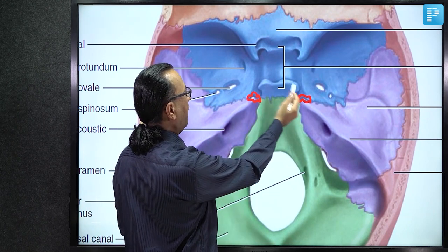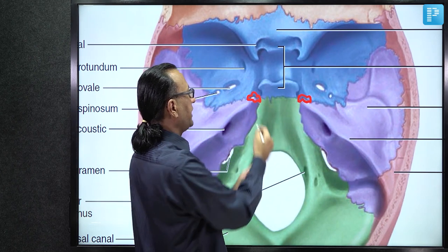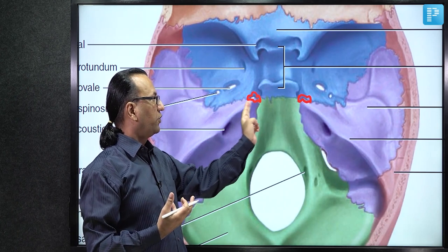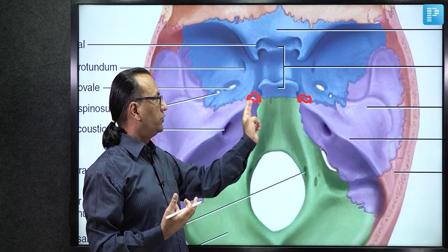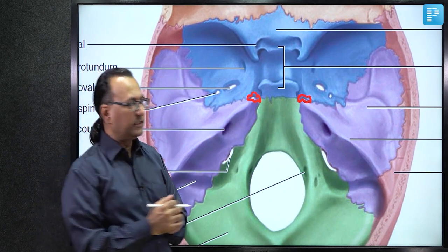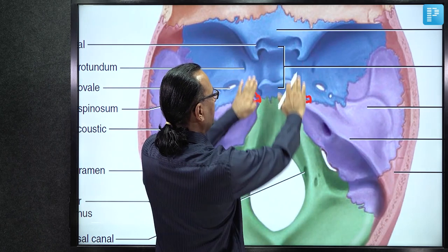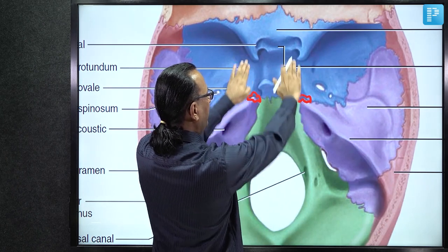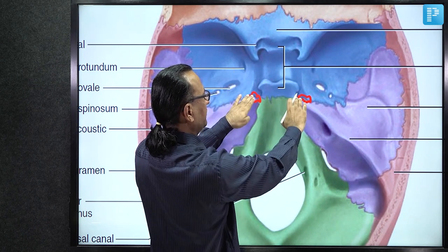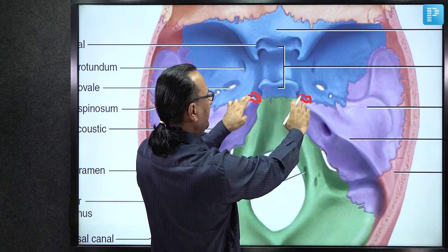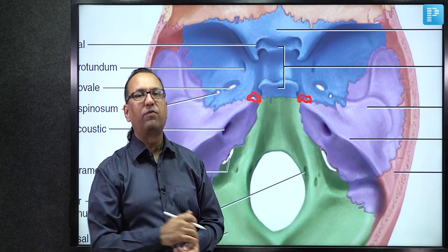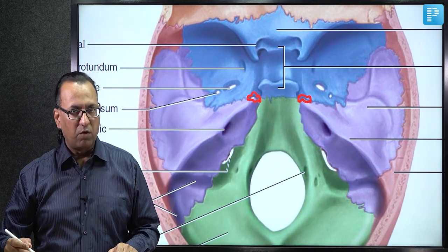Clinical importance of foramen lacerum: tumors such as nasopharyngeal carcinoma or angiofibroma can extend extracranially into the cranial cavity through it. It also has emissary veins connecting the extracranial pterygoid venous plexus with the intracranial cavernous sinus, allowing spread of infection from extracranial to intracranial cavity.